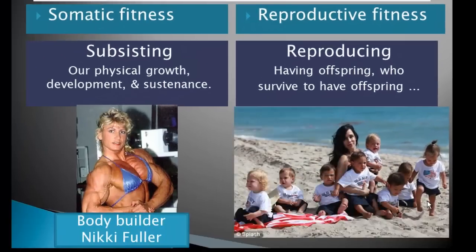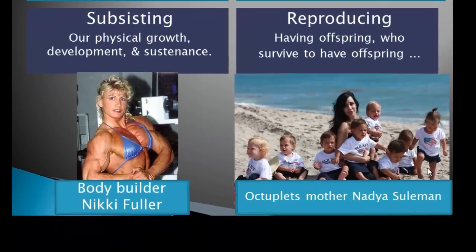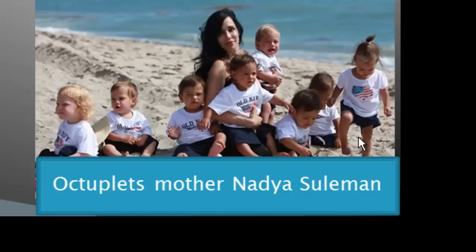This photo is quite a contrast to the photo of Nikki Fuller. This is Nadia Suleman, who set a record by having eight babies — giving birth to eight children in one go — which is certainly something very modern and not at all characteristic of traditional human populations.